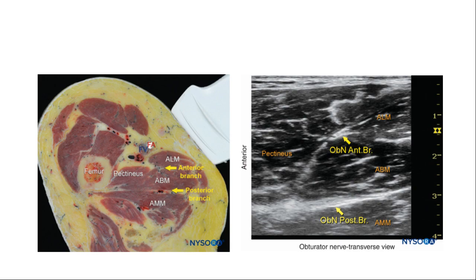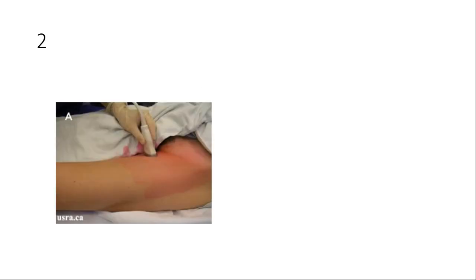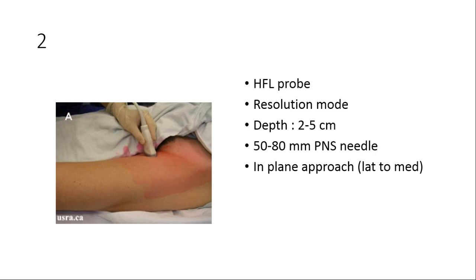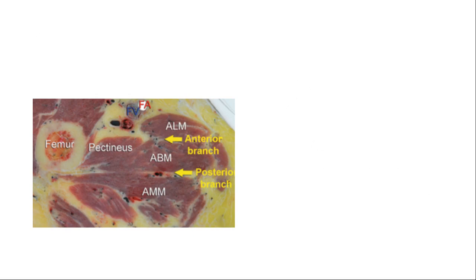The second approach is 2 to 5 centimeters distal to the inguinal crease. Here you focus on the three adductor muscles. Ultrasound settings are the same — high-frequency linear probe, depth 2 to 5 cm, 50 to 80 mm PNS needle, in-plane lateral to medial. Local anesthetic is 5 ml to each division at half concentration of lidocaine.